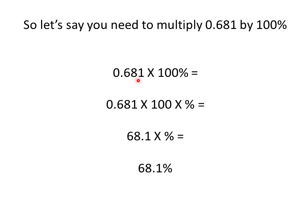So 0.681 times 100 percent. We're going to think of this as a product and rewrite it as 0.681 times 100 times the percent symbol. Taking the decimal times 100 gives us 68.1 times the percent symbol. Now 68.1 times the percent symbol gives us our final answer of 68.1 percent.